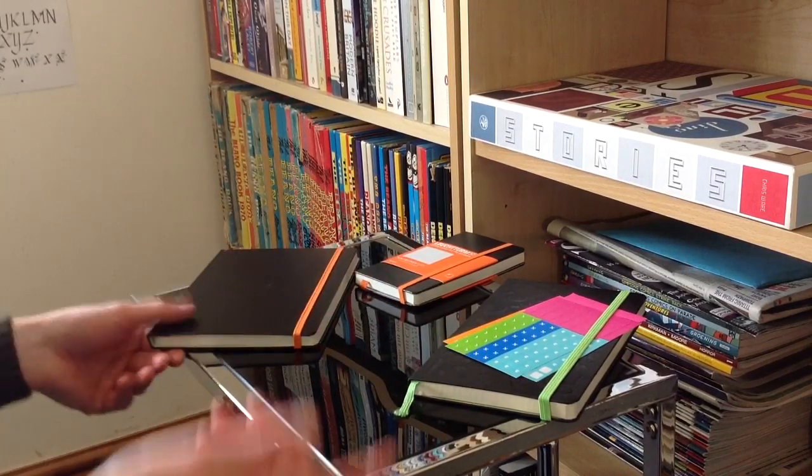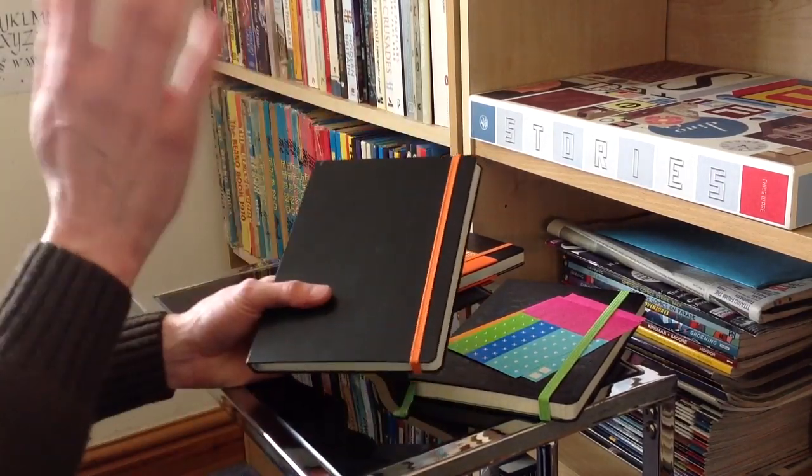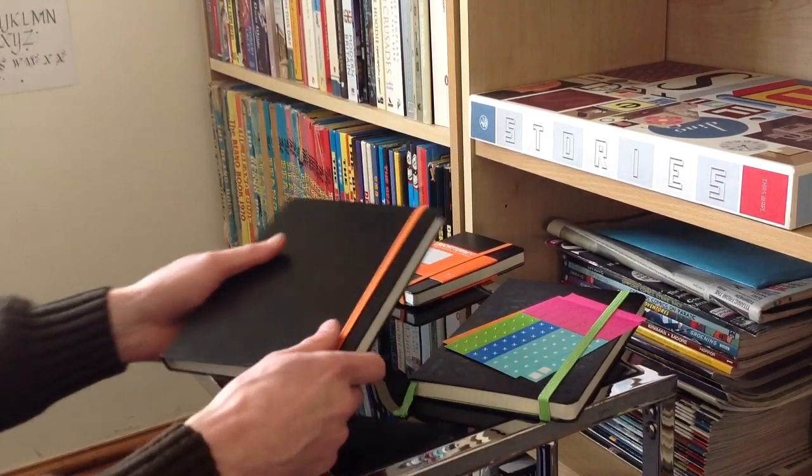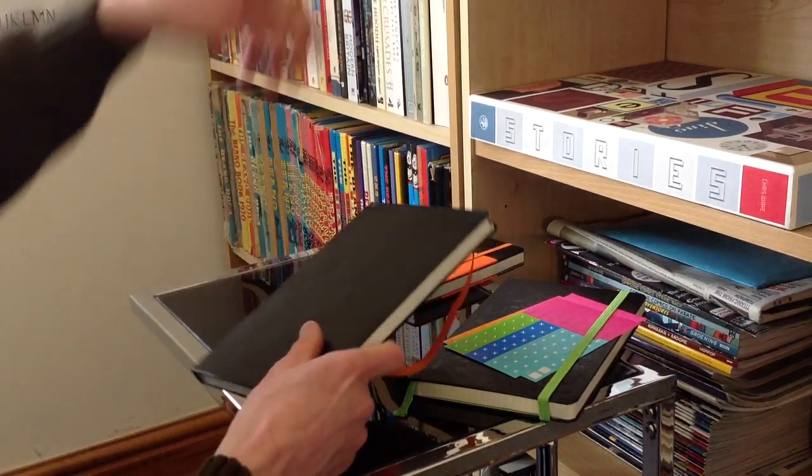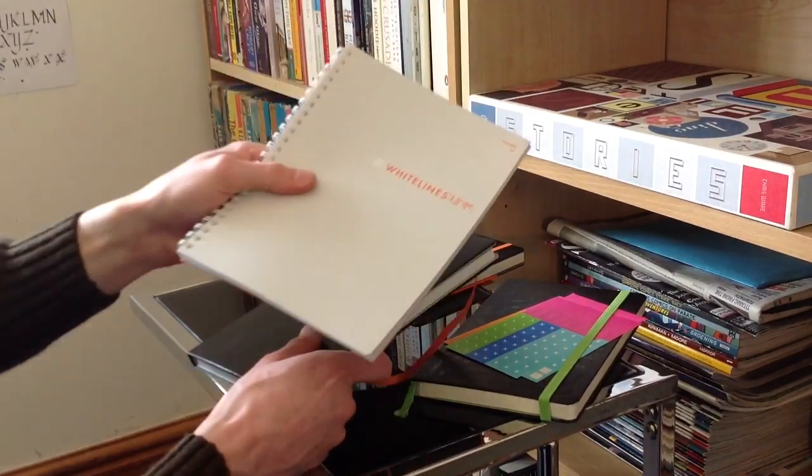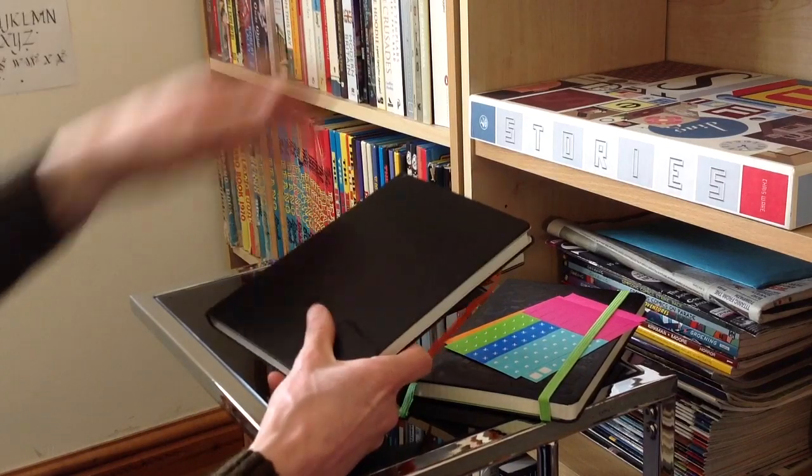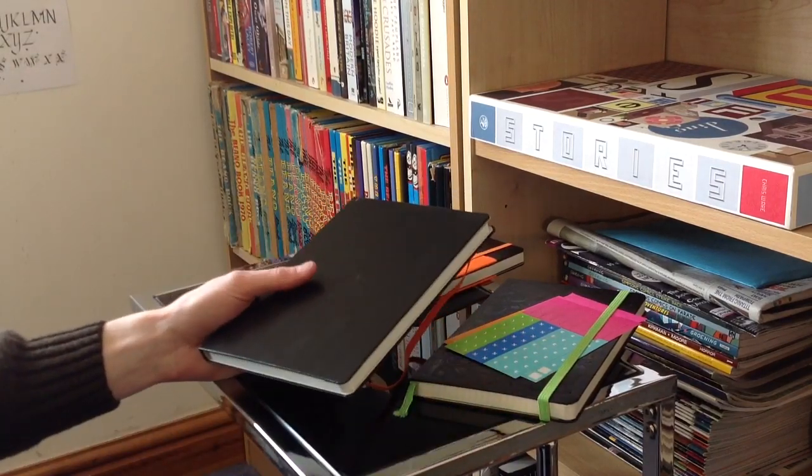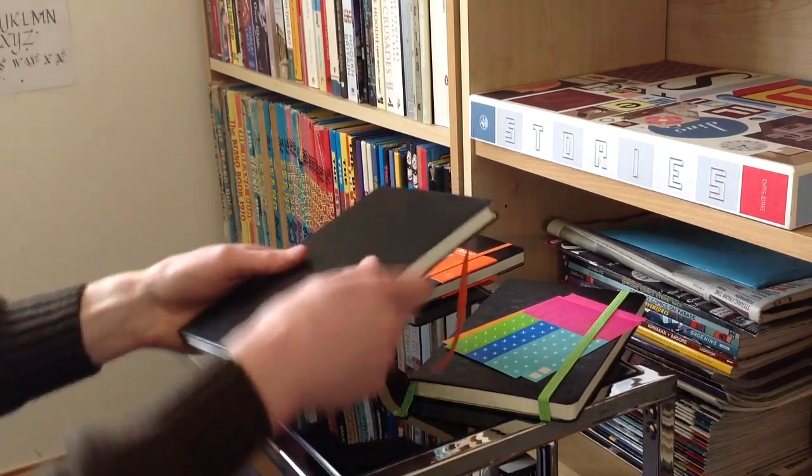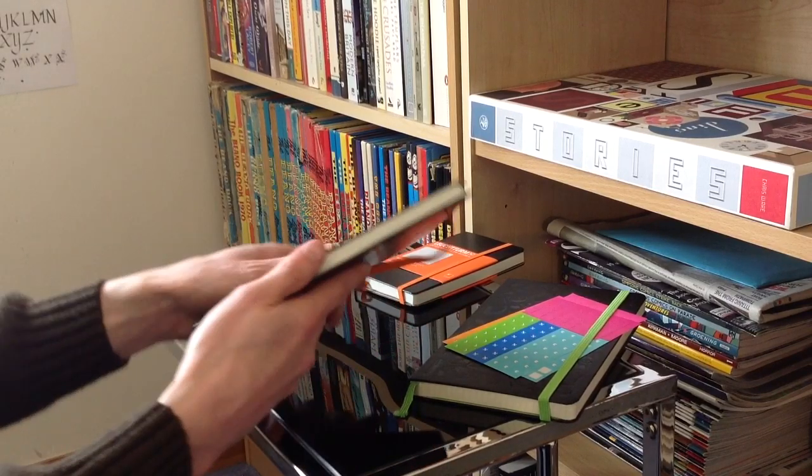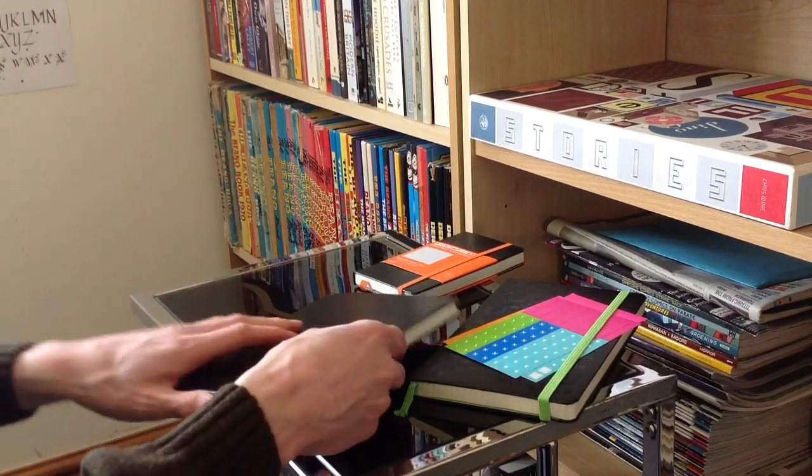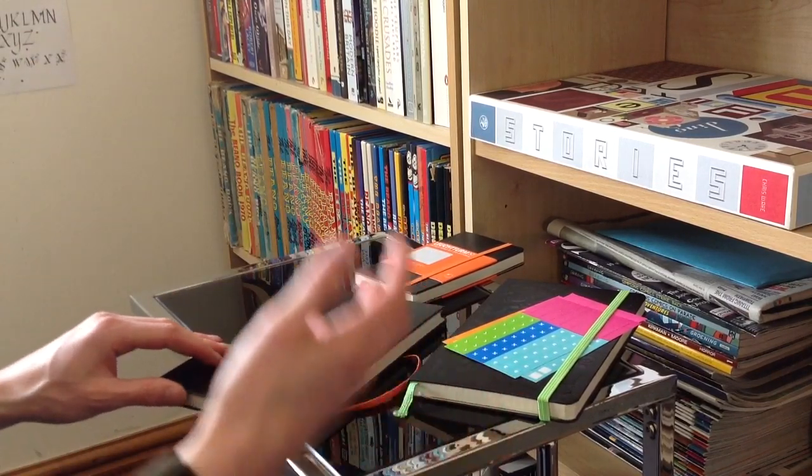But I've done that one first because White Lines, oh my goodness me. I've had a White Lines notebook, similar to this one, that I've had out on the boat that I live on for a good few months now. And I absolutely, I think there's about seven sheets left of it unused because I just think the White Lines app is fantastic.